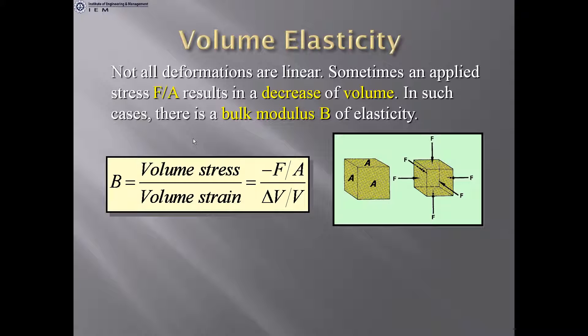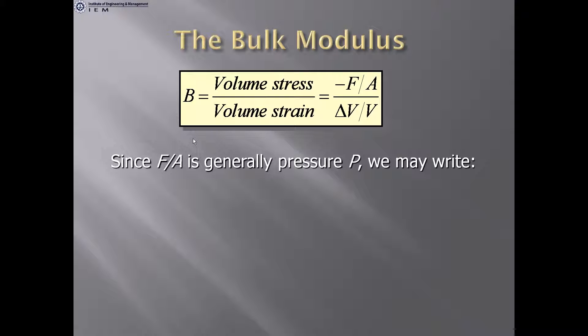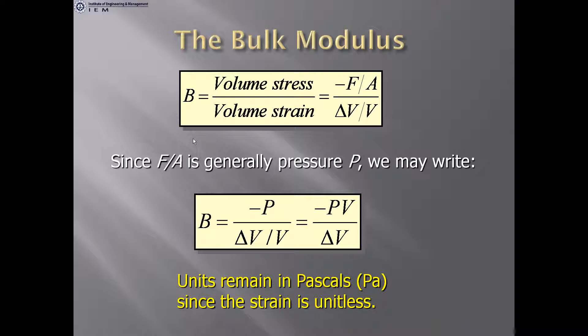Volume elasticity: not all deformations are linear. An applied stress F/A may result in a decrease of volume, giving a bulk modulus B of elasticity. Bulk modulus = volume stress / volume strain. Since F/A is generally pressure P, B = −P / (ΔV/V). The bulk modulus is negative because it represents a decrease in volume. Units remain Pascal since strain is dimensionless.